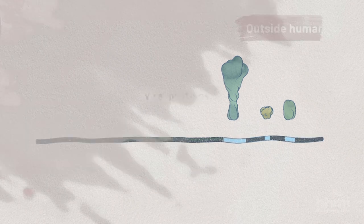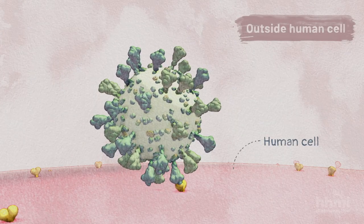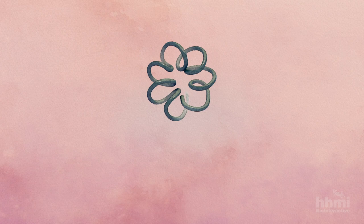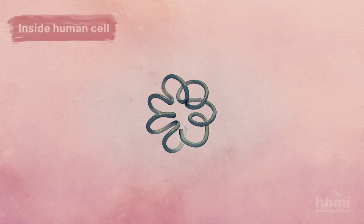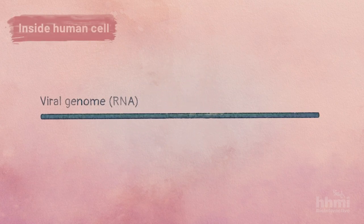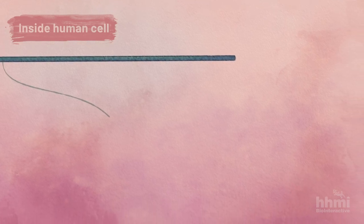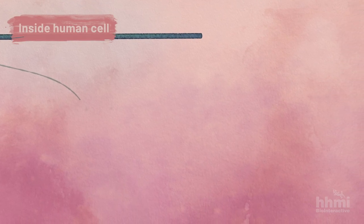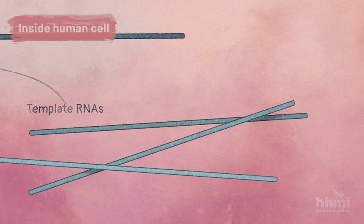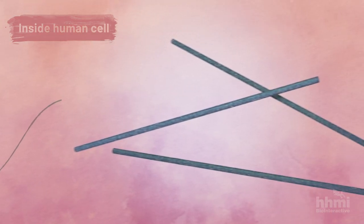When the virus infects a cell, its genome is replicated or copied. First, the virus makes strands of complementary RNA called template RNAs. The template RNAs are used to produce copies that match the original virus's genome.